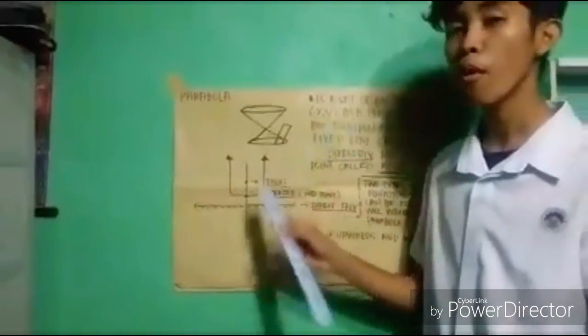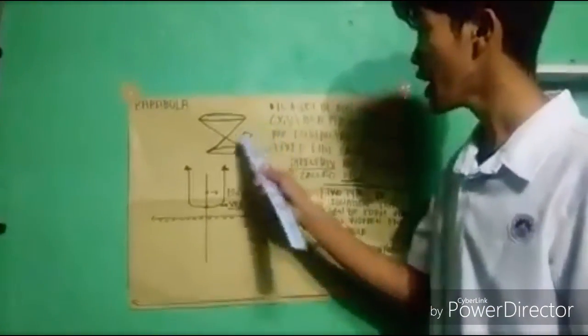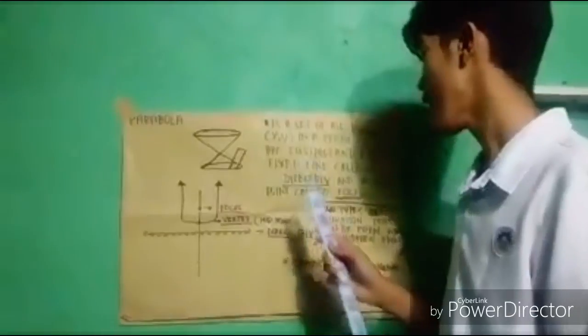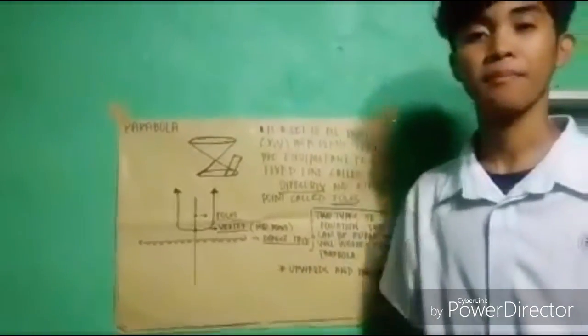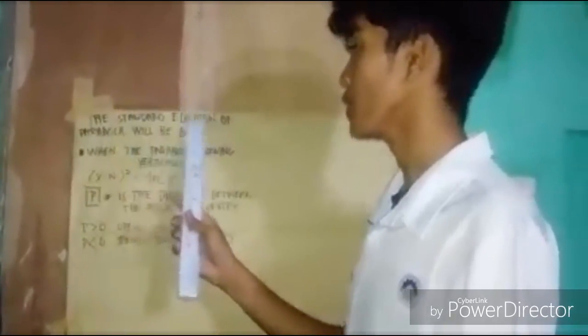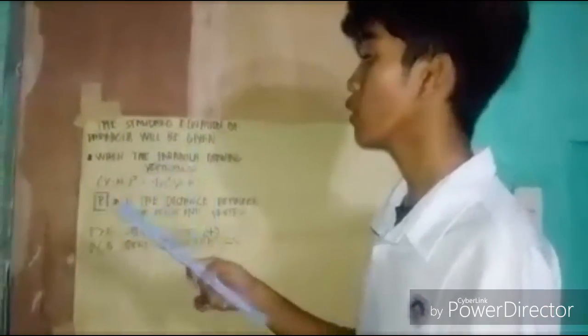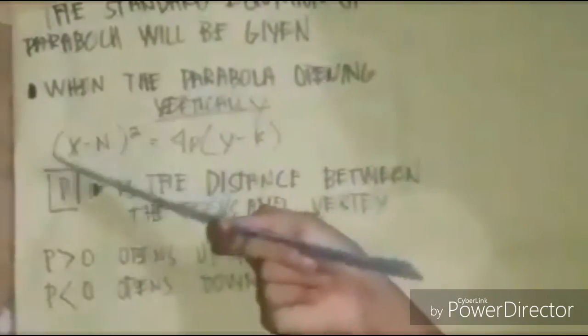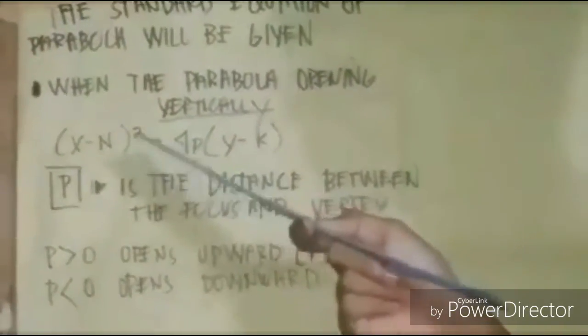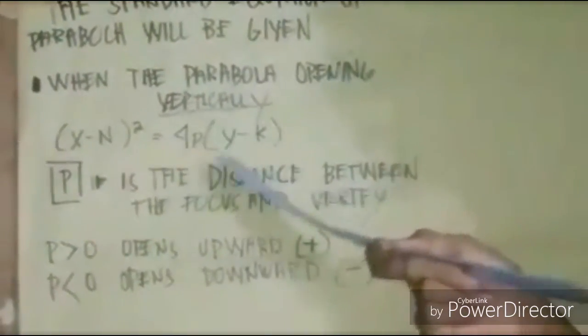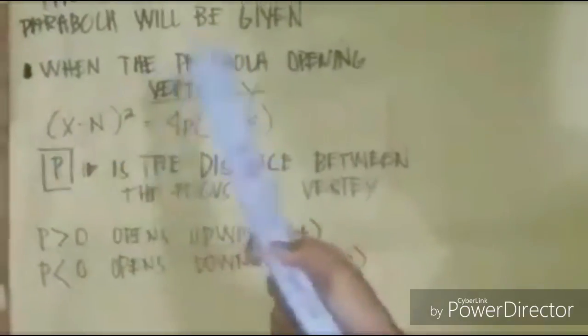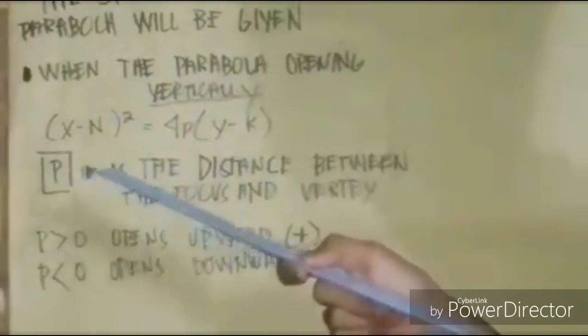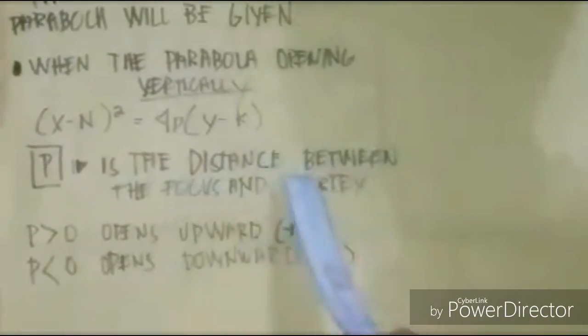Alam niyo ba guys na merong nabubuong equation kapag inaaral natin ang parabola? It's the upwards and downwards. The standard equation of parabola will be given when the parabola opening vertically. And guys, ang ibibigay niyang equation kapag ang parabola is nabukas ng vertically is (x minus h) squared equals 4p(y minus k). Yung p natin stands for the distance between the focus and the vertex.